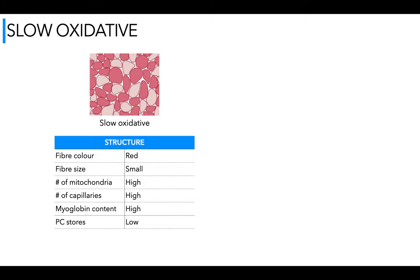PC stores — phosphocreatine stores — are low. Phosphocreatine is used to generate energy in very fast explosive movements, but we have a small fiber size and low force, so we don't have high creatine stores. Glycogen stores are also low. As we're using oxygen, you can get energy from glycogen, but at low intensity the idea is to use triglyceride — fat stores. As intensity goes up you might use more glycogen, but compared to the other fiber types, glycogen stores here are low.